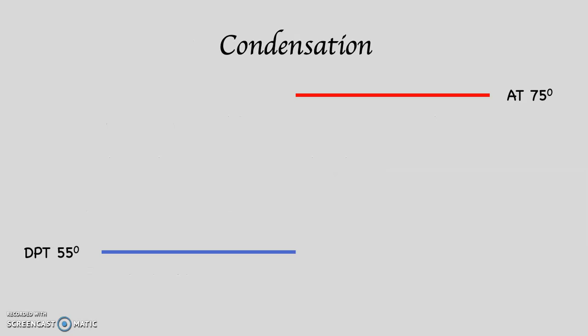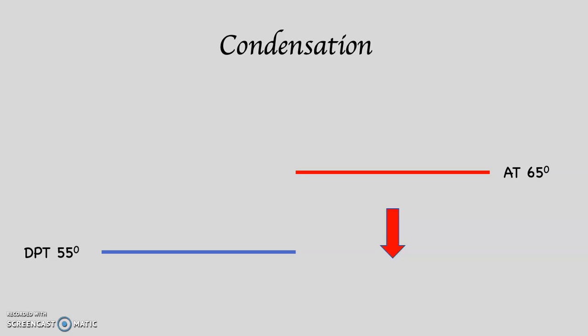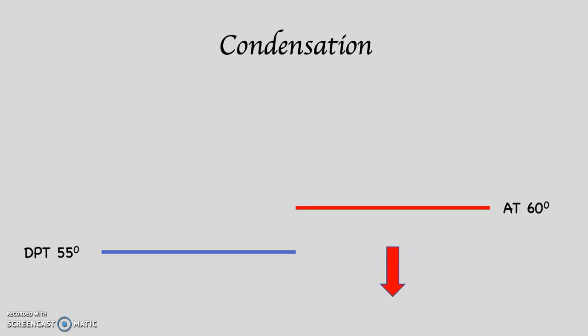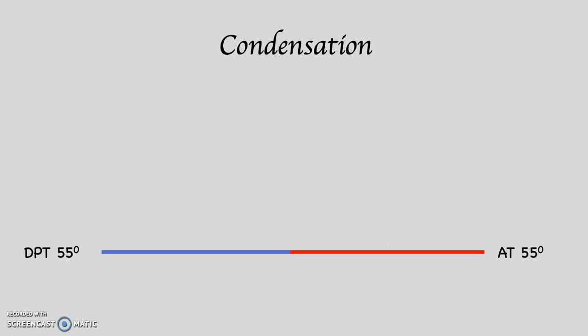Let's take a look at this diagram. Dew point temperature is on the left-hand side at 55 degrees; air temperature is on the right-hand side at 75 degrees. What's going to happen is air temperature will begin to drop. As long as air temperature and dew point temperature are not the same number, relative humidity is not 100%, so we are not going to get any visual manifestation — dew, frost, snow, rain, or hail. But as air temperature drops from 75 to 70, 65, 60, the lines get closer and closer. Now the air temperature and the dew point temperature are both 55 degrees. At that moment, relative humidity is 100%, the air is saturated, and something is going to begin to happen.